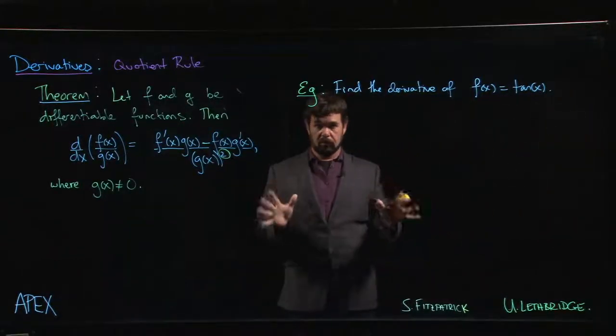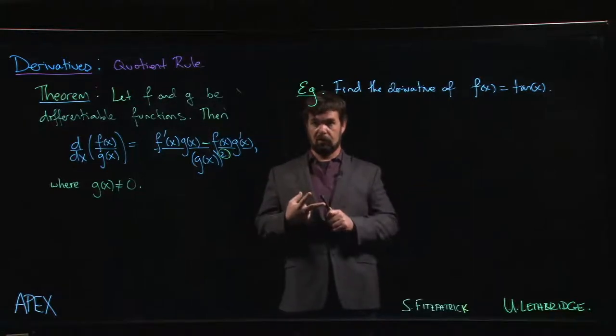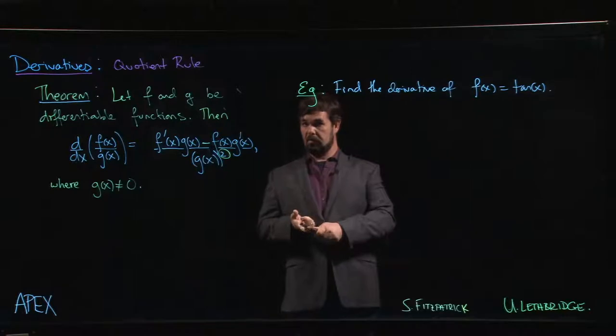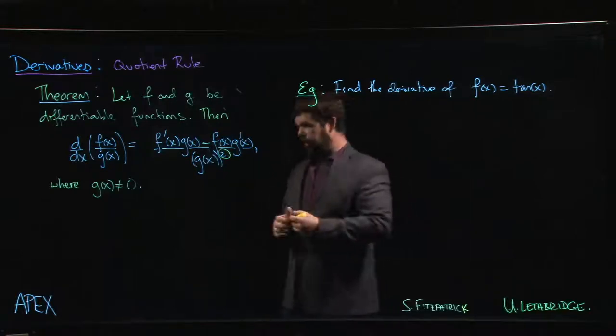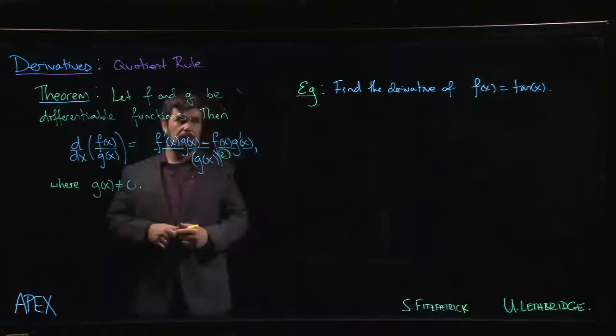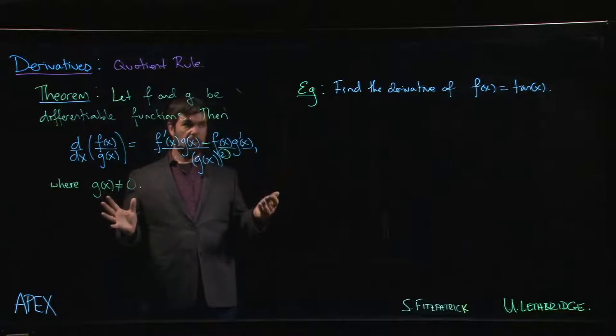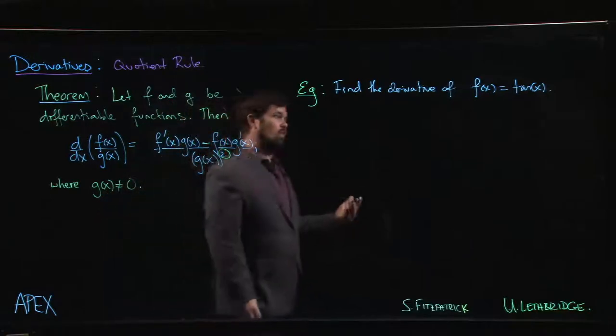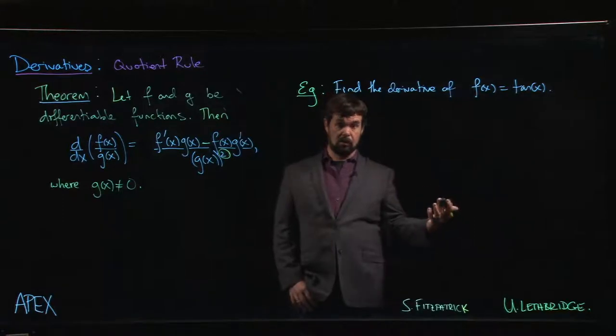So you might have noticed that so far we've only discussed the derivatives of two out of the six trig functions. We know the derivative of sine and the derivative of cosine, but we haven't looked into any of the other ones. The reason is that all the other ones can be expressed in terms of ratios of sine and cosine, and ratios are quotients. So the easiest way to deal with derivatives of those ratios is using the quotient rule.